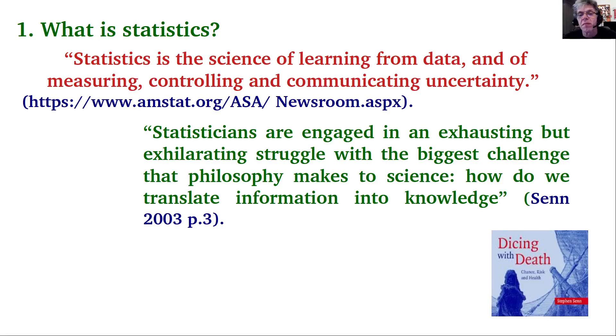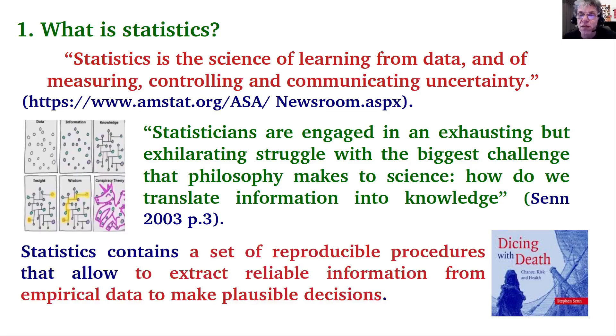I find myself more motivated by a quote from Stephen Senn's book saying that statisticians are engaging in an exhilarating struggle with the biggest challenge that philosophy makes to science, which is how to translate information into knowledge. Statistics therefore contains a set of reproducible procedures that allow extracting reliable information on the basis of observations and experiments from which we estimate parameters of statistical models. These estimated parameters, along with their uncertainty, guide us to make plausible decisions about the world.